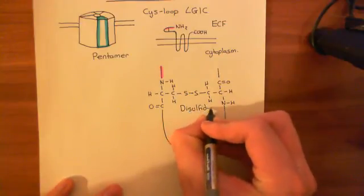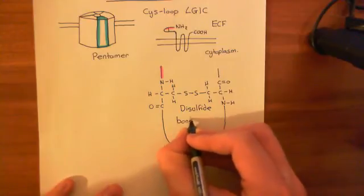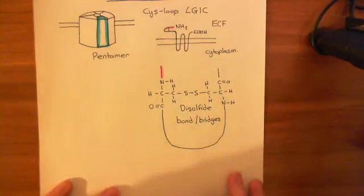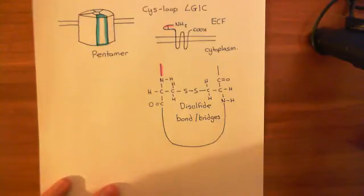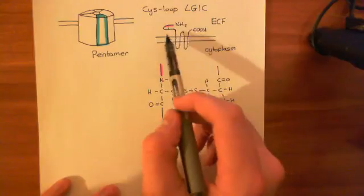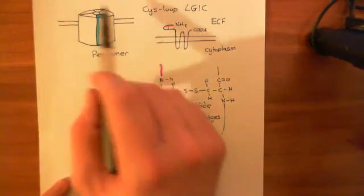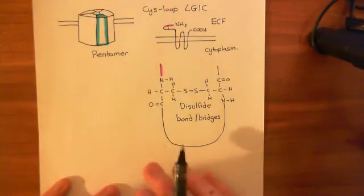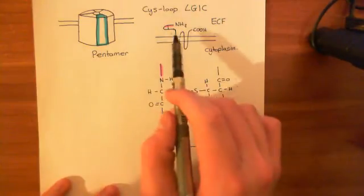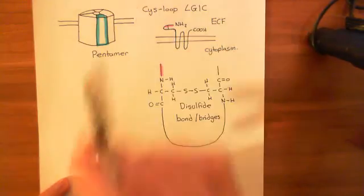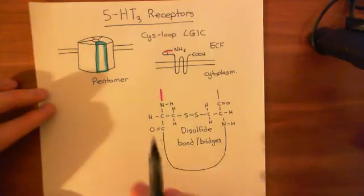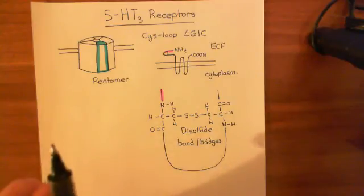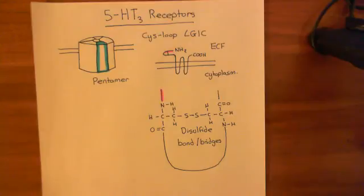Disulfide bonds are also often referred to as disulfide bridges, because they bridge the two polypeptide strands — even though it is actually the same polypeptide in this case. That's why these are named cysteine loop ligand-gated ion channels: the structure of the monomer that makes up the pentameric receptor or ion channel has this cysteine loop within it. All cysteine loop ligand-gated ion channels have this cysteine loop structure, and 5-HT3 receptors are one example, but others include the nicotinic acetylcholine receptor, the GABA-A receptor, and the glycine receptors in the spinal cord.